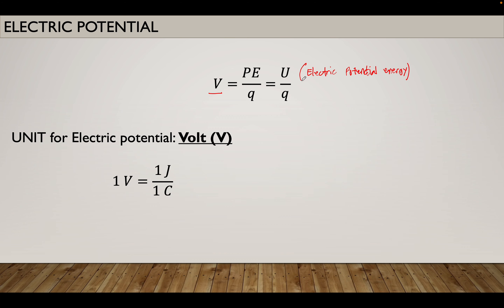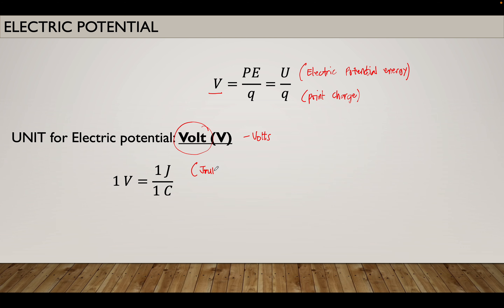Electric potential energy is divided by the point charge Q. So when we solve for the electric potential V, it is equal to the electric potential energy U divided by the point charge Q. The unit for electric potential is volt, capital letter V, or volts. One volt is equivalent to one joule per coulomb.